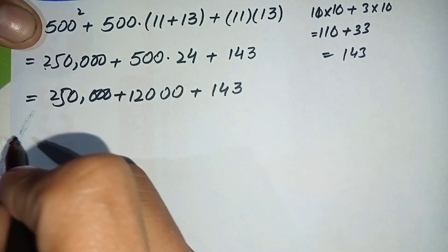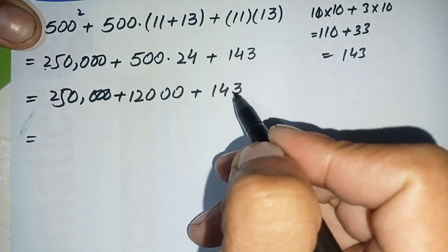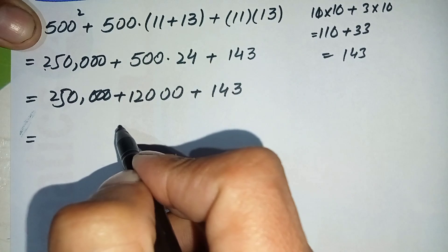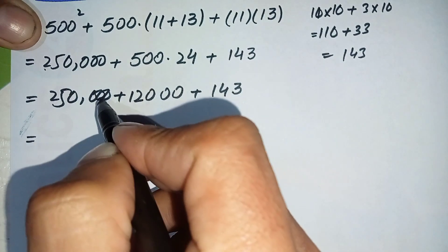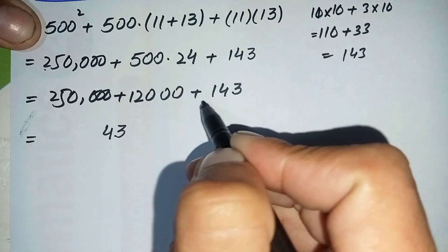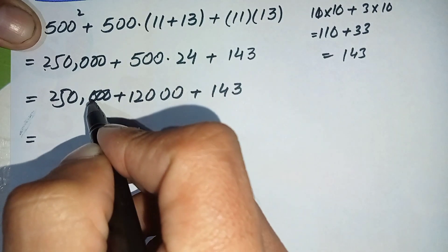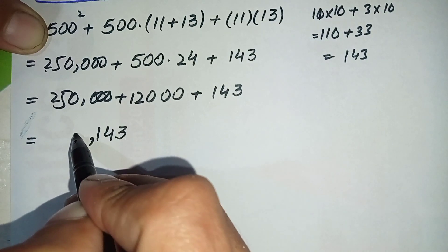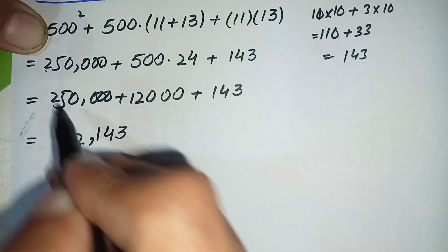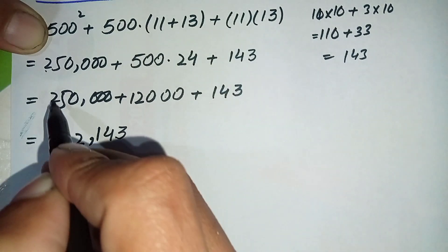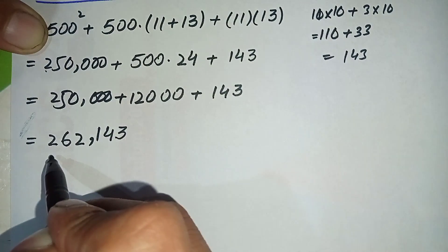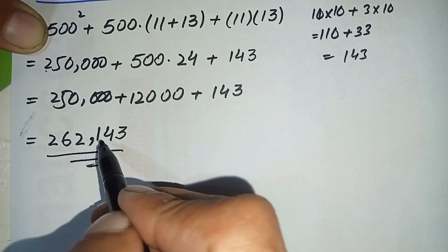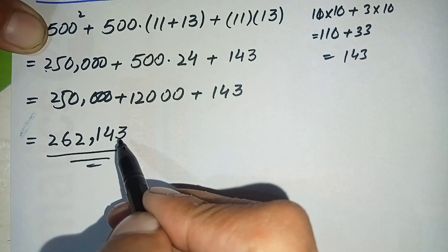So let's add these three numbers starting from the ones position. 3 plus 0 plus 0 is 3, 4 plus 0 plus 0 is 4, 1 plus 0 plus 0 is 1, 2 plus 0 is 2, 1 plus 2 is 3, and we get 262,143.